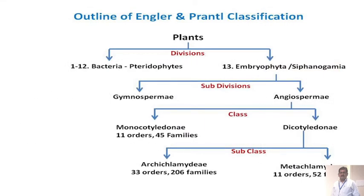This is an outline of the Engler and Prantl system of classification. The plants are divided into two divisions. In the first division, divisions 1 to 12, the Bacteria and Pterophytes. And in the second division, the 13th division, the Embryophyta Siphonogamia. Then the Embryophyta Siphonogamia is divided into two subdivisions: the Gymnospermia and Angiospermia.